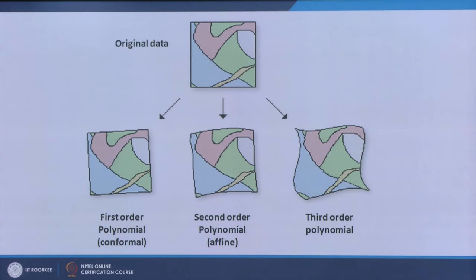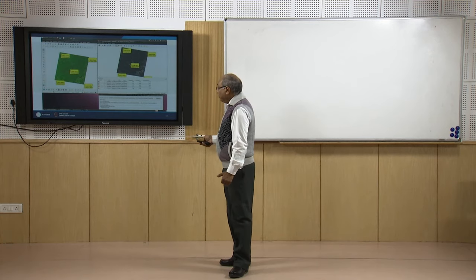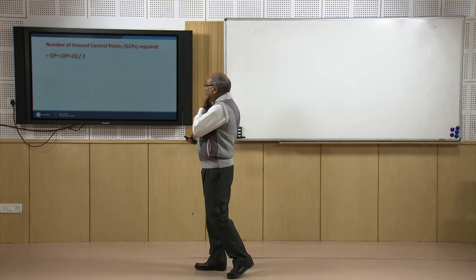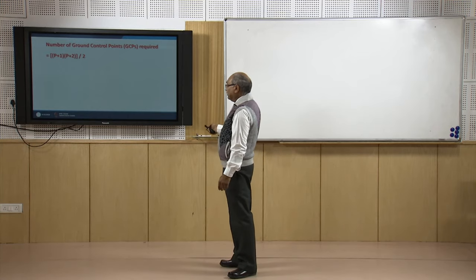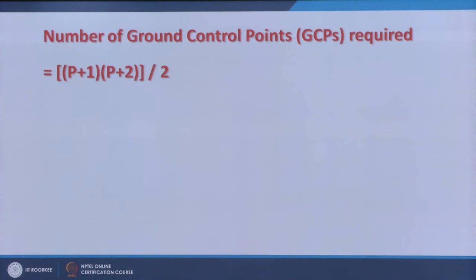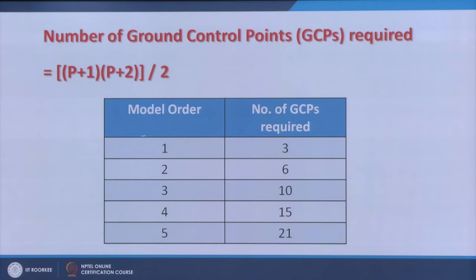As you go higher in polynomial order, the number of ground control points required becomes much higher. The minimum number of GCPs required follows the formula based on polynomial order P: for first-order polynomial, minimum 3 GCPs are required; for second-order, 6 GCPs; and for third-order, a minimum of 10 GCPs are required.